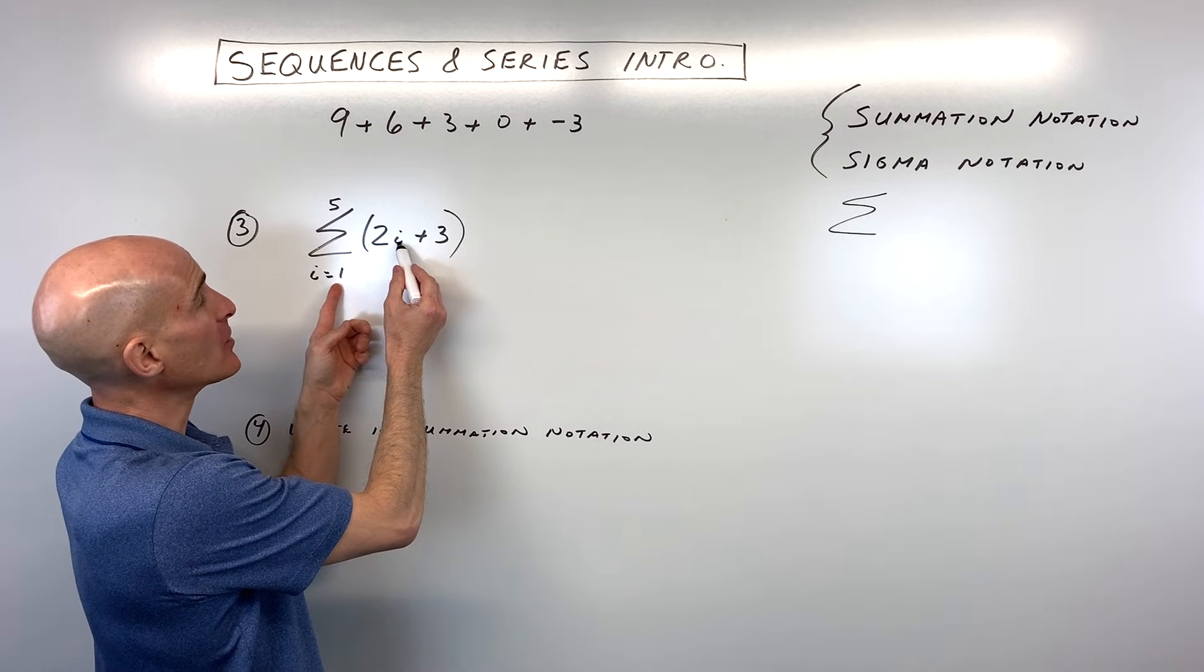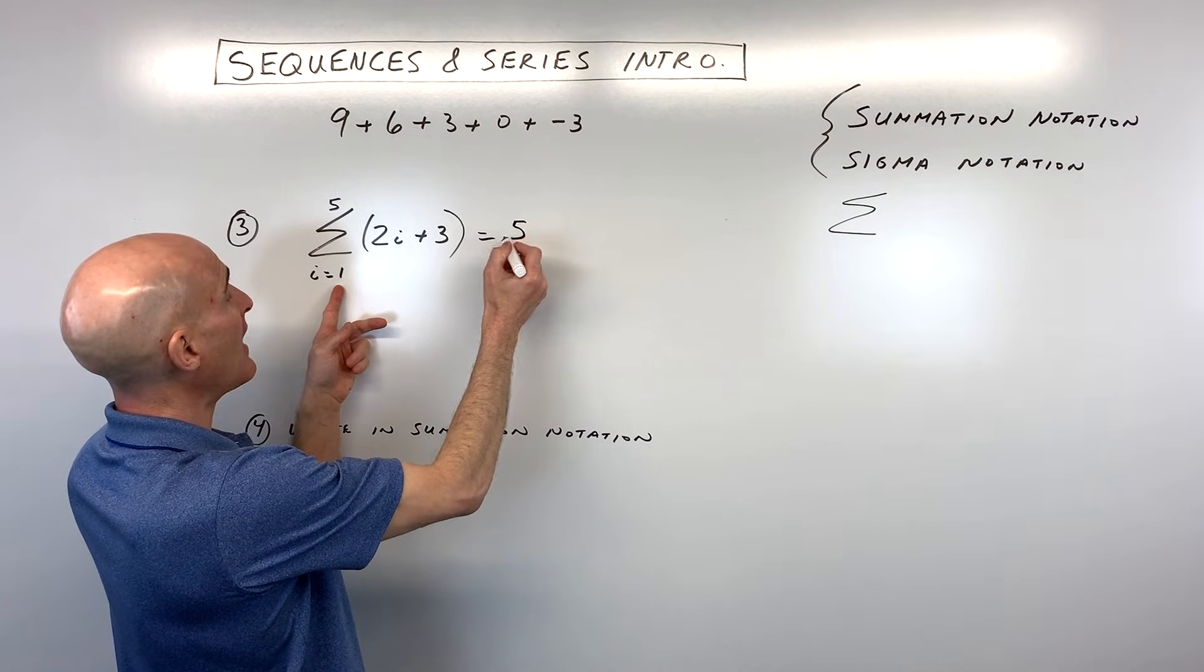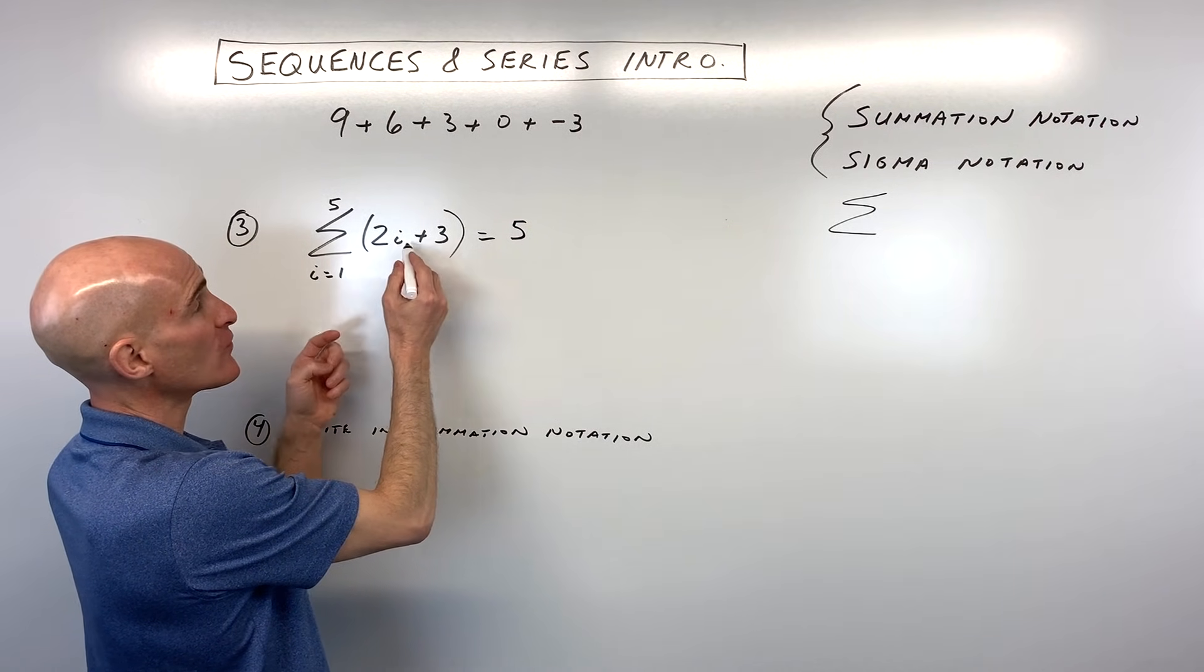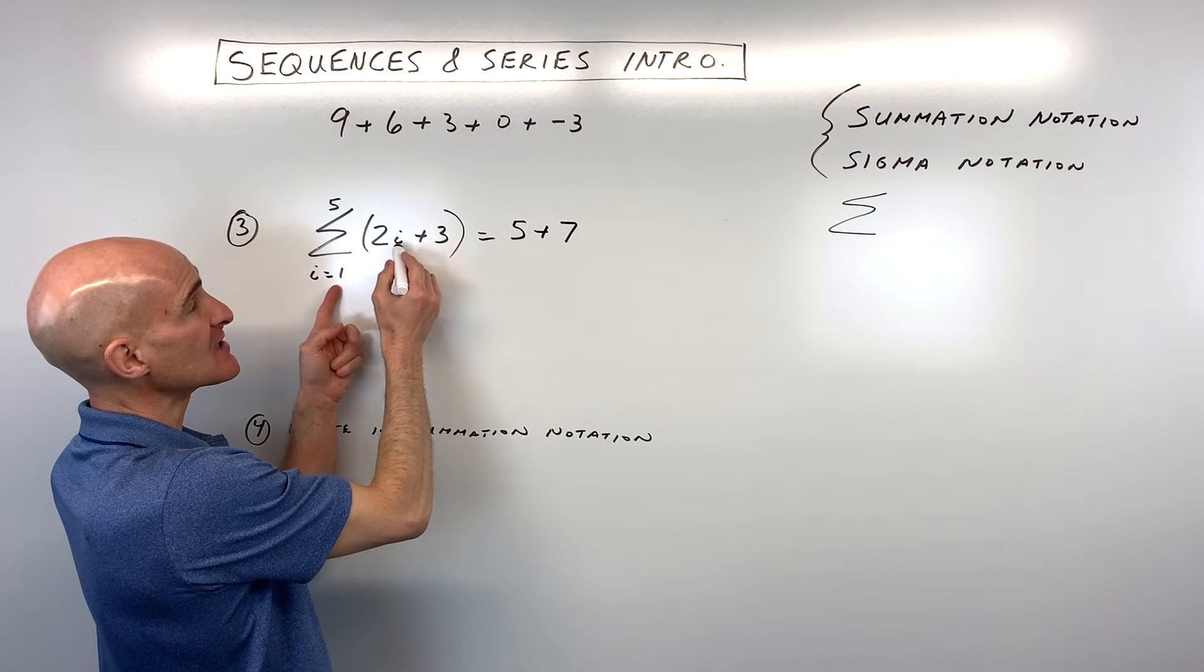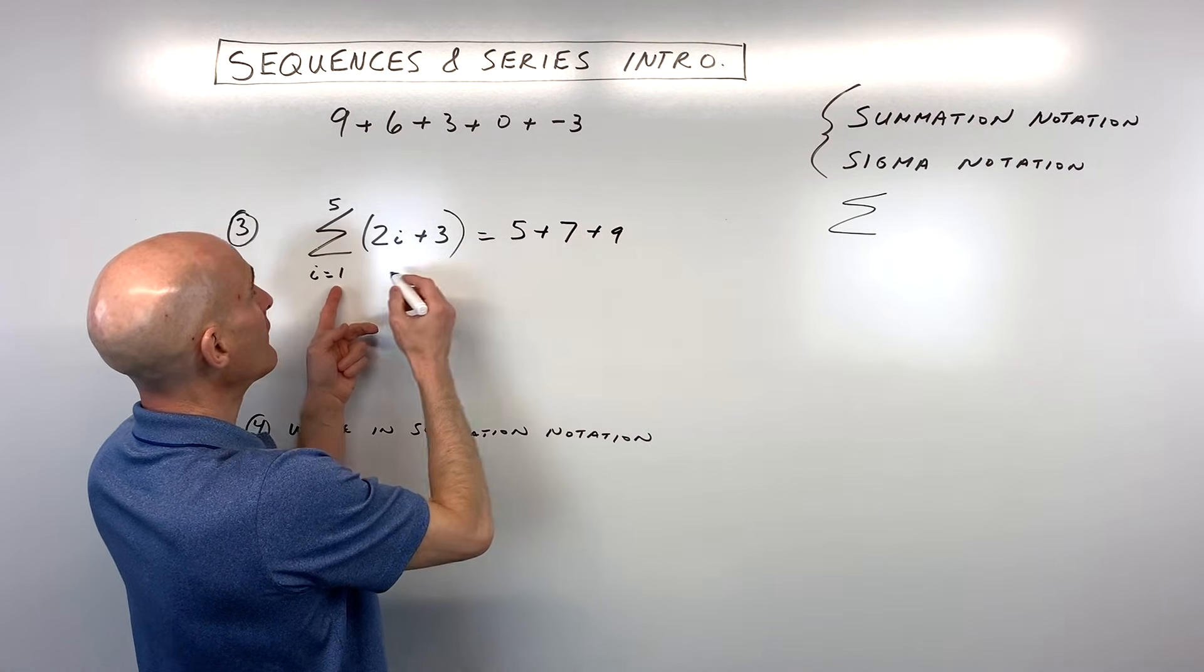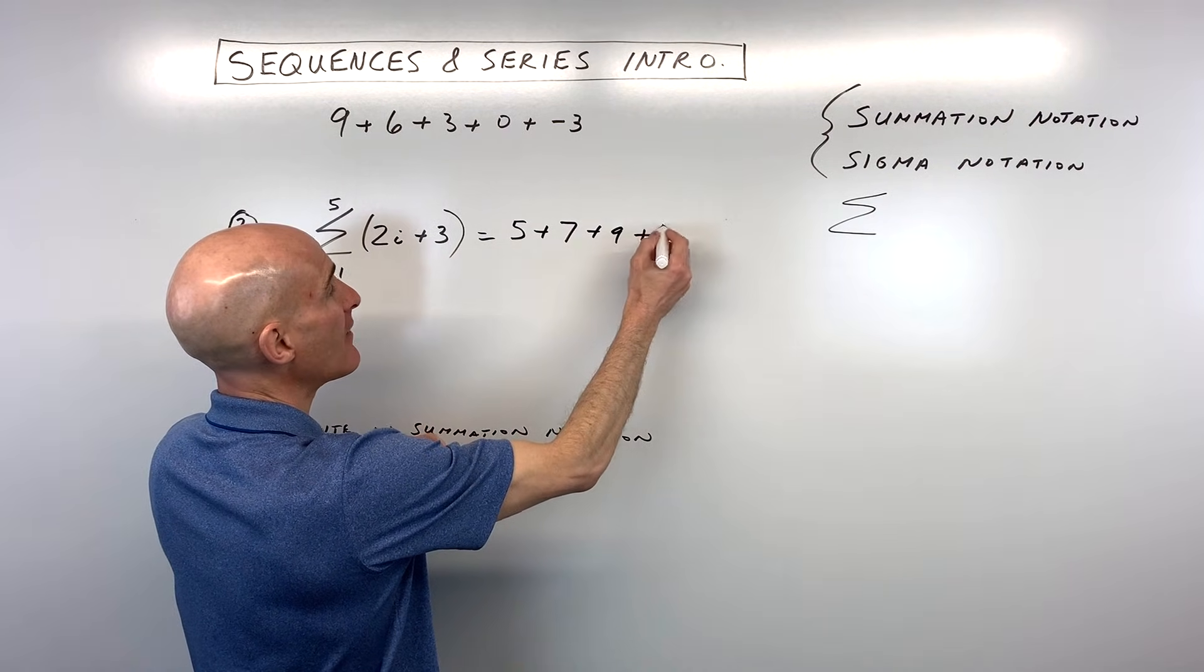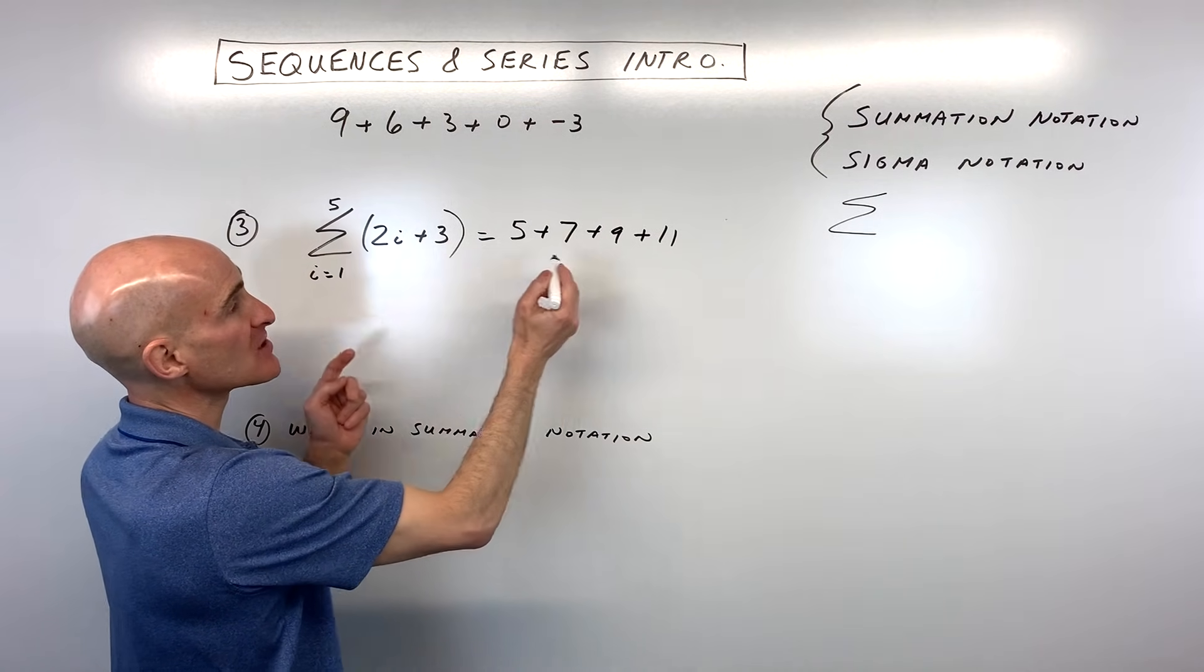So let's go ahead and do that. So if I put 1 in here, 2 times 1 is 2, plus 3 is equal to 5. If I put the next number, which is 2, that's going to be 2 times 2 is 4, plus 3 is 7. If I put 3 in there, 2 times 3 is 6, plus 3 is 9. If I put 4 in there, that's 2 times 4 is 8, plus 3 is 11. And if I put this top number in here, 5, 2 times 5 is 10, plus 3 is 13.